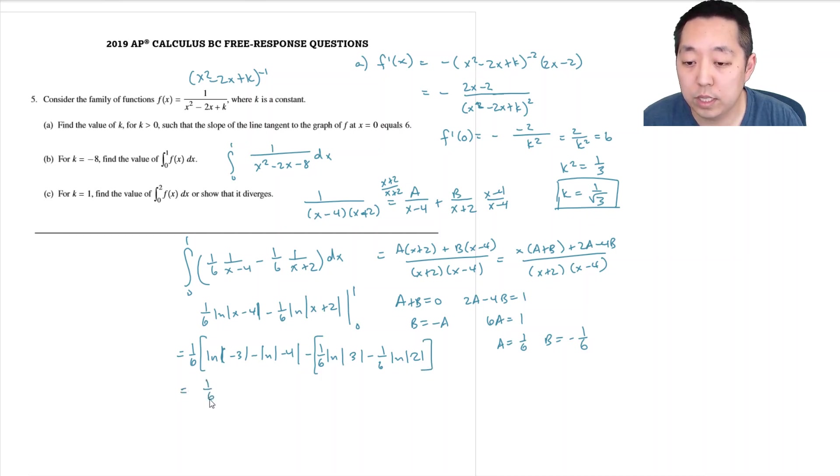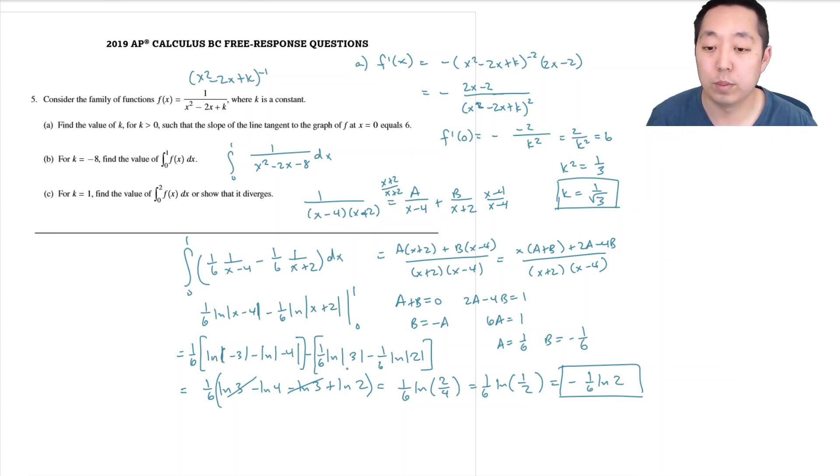This ends up being 1/6 ln of 3. Let's just factor out the 1/6: 1/6 times (ln 3 minus ln 4 minus ln 3 plus ln 2). The ln 3 terms cancel, so this becomes ln 2 minus ln 4, which is ln(2/4), which is 1/6 ln(1/2), or if you want it as a negative number, negative 1/6 ln 2. Either of these are fine.